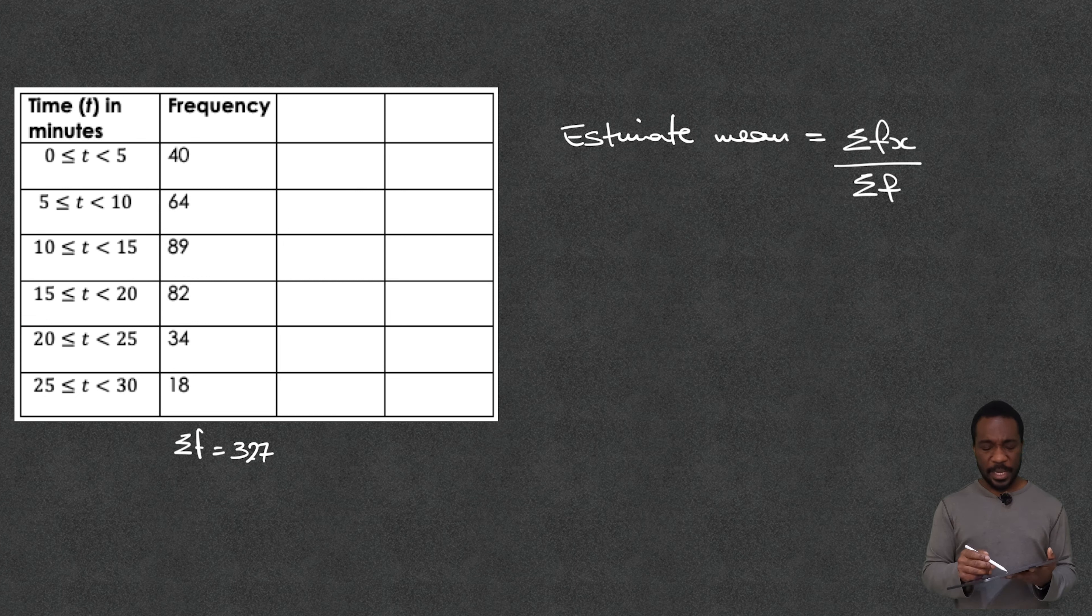Now the next thing is why do we call it an estimate? Well the reason why we call it an estimate is because we don't know how the data has been spread out here.